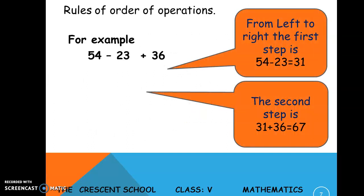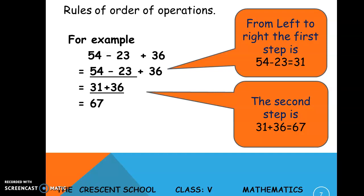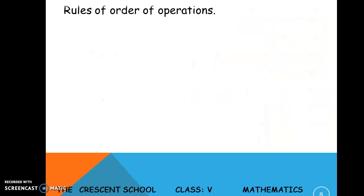Example for Rule 1: 54 minus 23 plus 36. Reading from left to right, the first sign is minus, so the first step is 54 minus 23, which equals 31. Then the second step is 31 plus 36, which gives the answer 67.